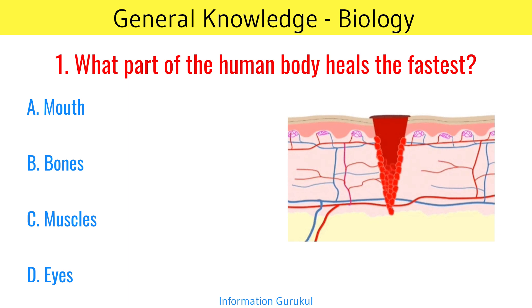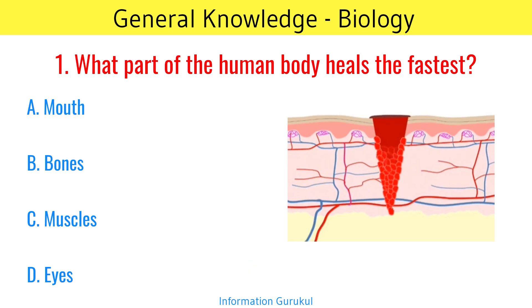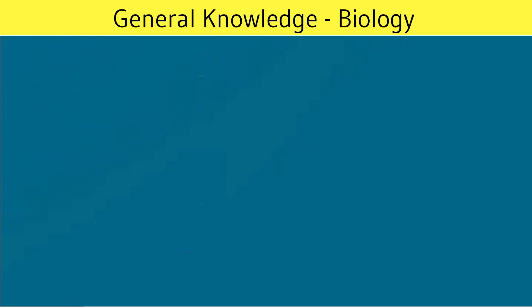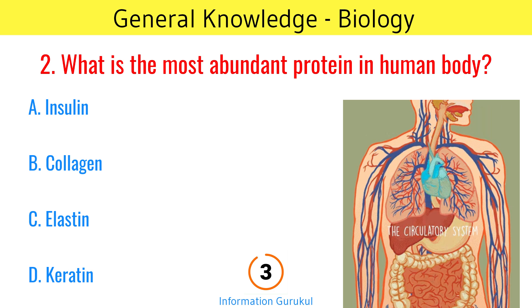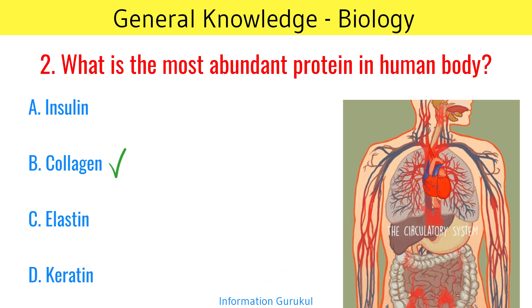What part of the human body heals the fastest? Mouth. What is the most abundant protein in the human body? Collagen.